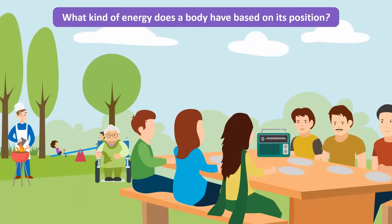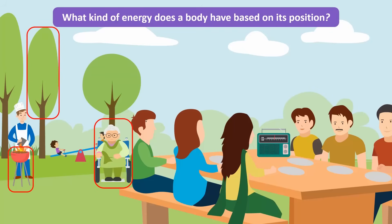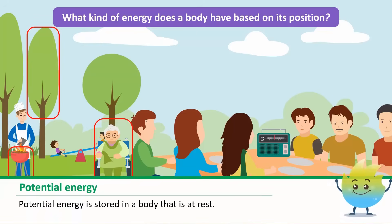What kind of energy can we find in other things or people that were not doing anything, such as grandma sitting on her wheelchair and the trees in the park or uncle's grill? Do you think they have no energy because they were not moving? Do you remember what kind of energy a body has based on its position? Potential energy is stored in a body which is at rest.